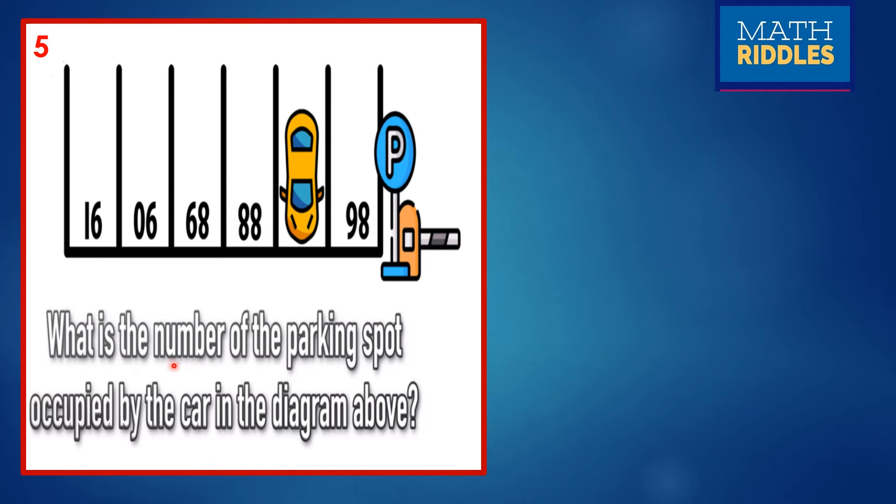The fifth question is what is the number of the parking spot occupied by the car in the above diagram? You can see here where the car has been parked. The parking spot number you have to give as the answer. You can give a pause and you can check. Think logically. Observe it carefully.